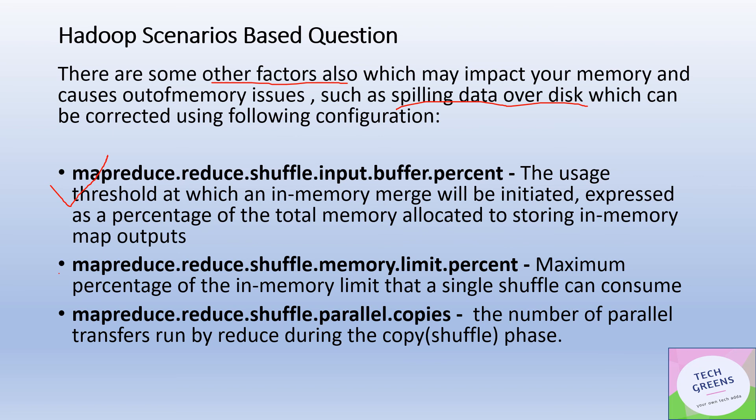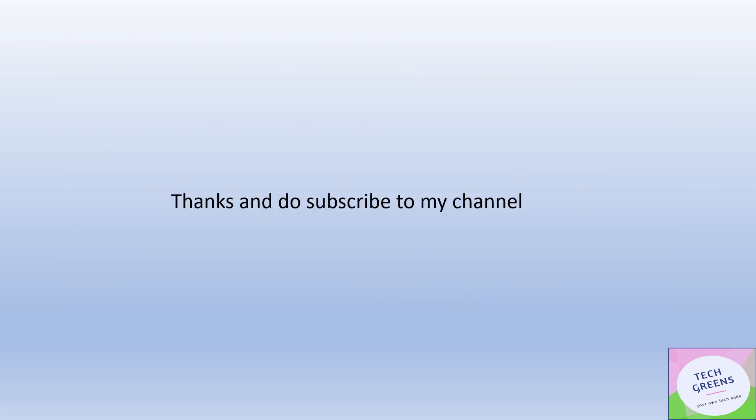One more important property for advanced configuration is `mapreduce.reduce.shuffle.parallel.copies`, which defines the number of parallel transfers run by the reducer during the shuffle phase. The shuffle phase is a major cause of out-of-memory issues because data must be serialized and loaded into memory before being sent across nodes. If memory doesn't suffice for that data volume, it results in out-of-memory errors. These are the key tuning parameters to help avoid such issues.